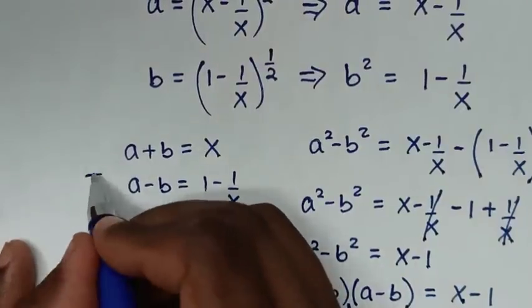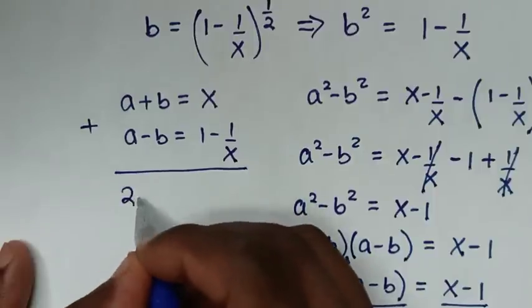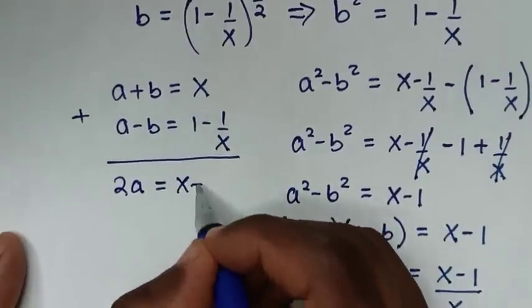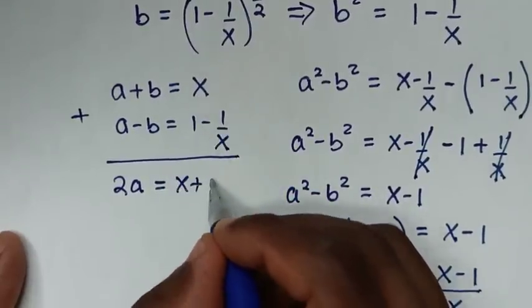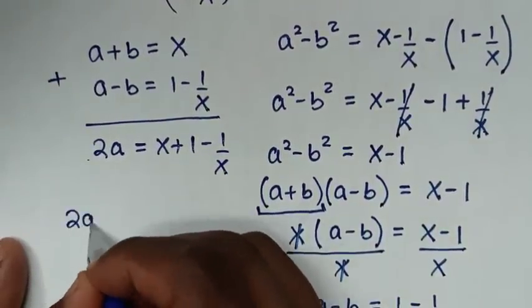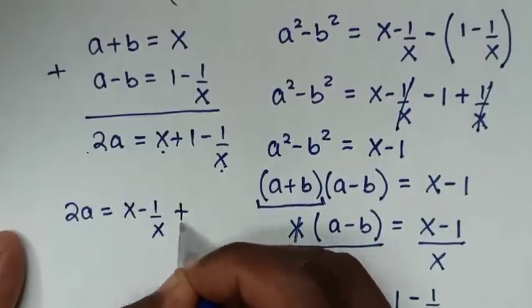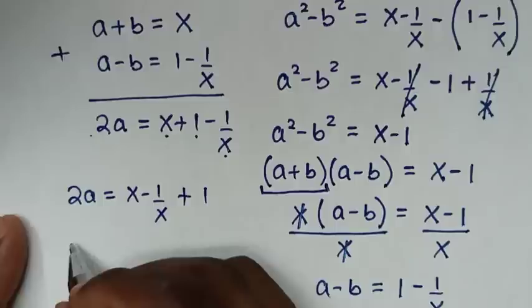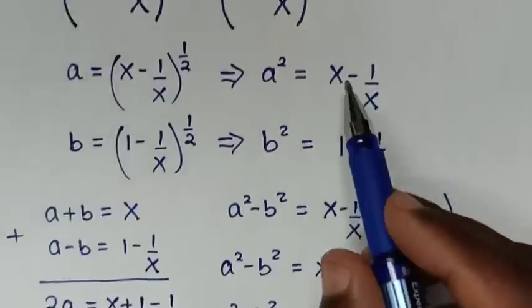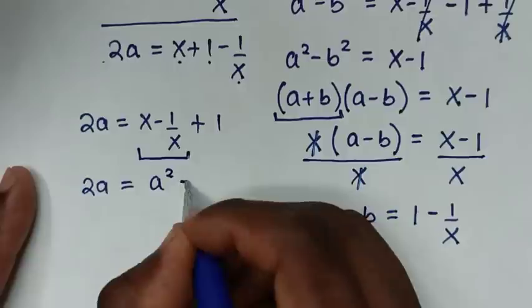We now add the two simultaneous equations together. a plus a gives 2a, and b plus negative b gives 0. The right-hand side is x plus 1 minus 1 over x. So 2a equals x minus 1 over x plus 1. Since a squared equals x minus 1 over x, we substitute a squared, giving 2a equals a squared plus 1.